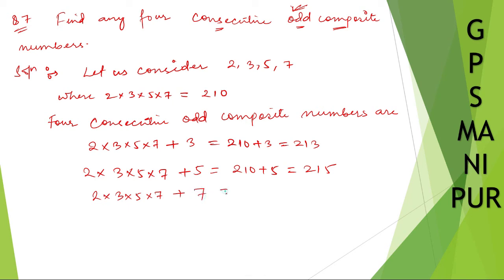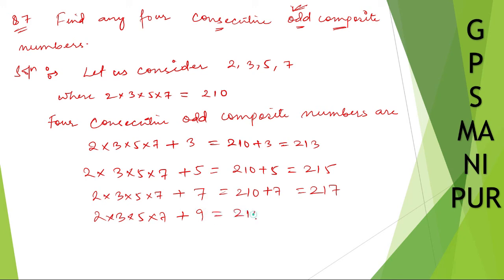Then two into three into five into seven plus seven, which is two hundred seventeen. And two into three into five into seven plus nine, which is two hundred nineteen. So we have got four numbers: 213, 215, 217, and 219.